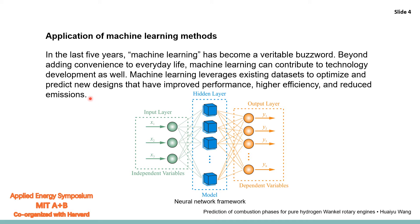Machine learning — in the past five years, machine learning has become a reputable buzzword. Beyond adding innovation to our life, machine learning can contribute to technology development as well. Machine learning techniques allow researchers to optimize and predict new designs with improved performance, high efficiency, and reduced emissions. This is the neural network framework. It contains the input layer, a hidden layer, and an output layer.